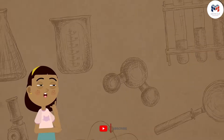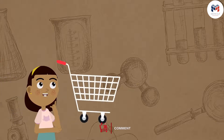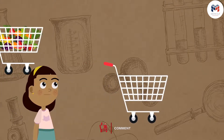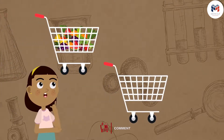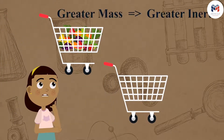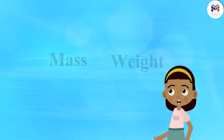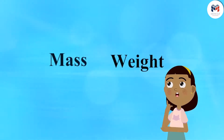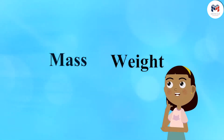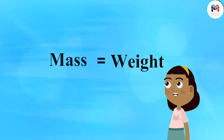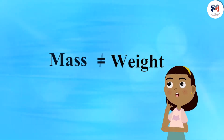Remember, we learned that the mass of an object is the measure of its inertia, and we also learned that greater mass offers greater inertia. Now, let's understand more about mass and how it is related to weight but is not the same as weight.